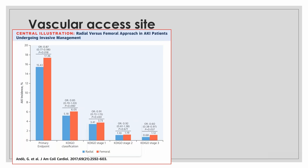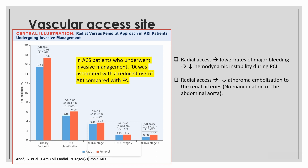In the AKI sub-study of the MATRIX trial, it was found that in ACS patients who underwent invasive management, radial access was associated with reduced risk of acute kidney injury compared with femoral access. This is because radial access is associated with lower rates of major bleeding, lower chances of hemodynamic instability during PCI, and decreased atheroma embolization to the renal arteries as there is no manipulation of the abdominal aorta.